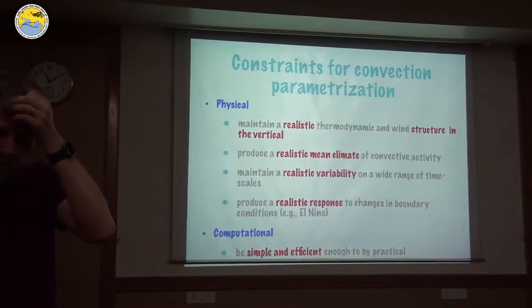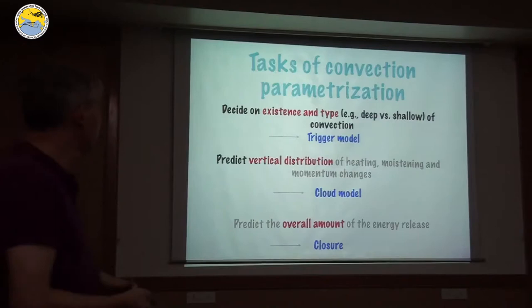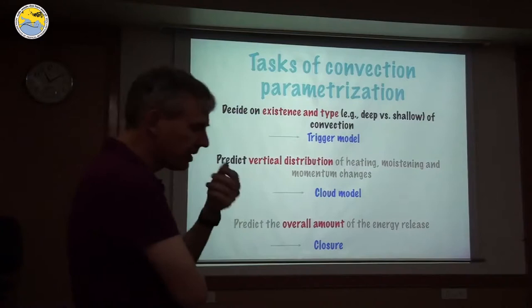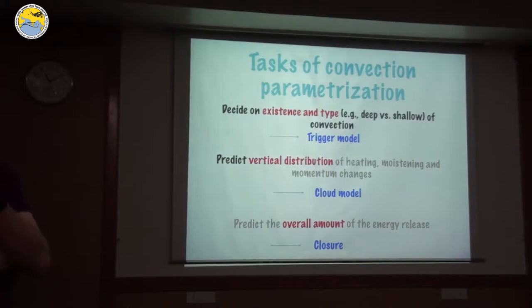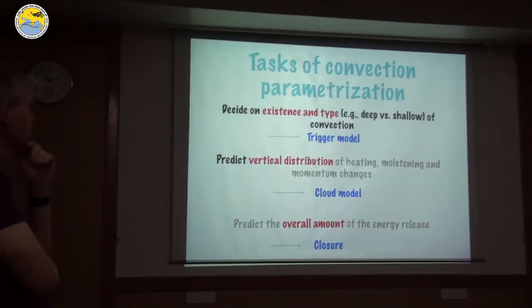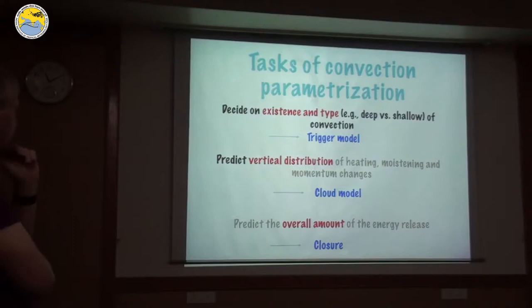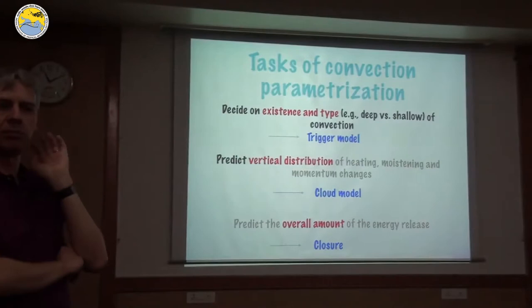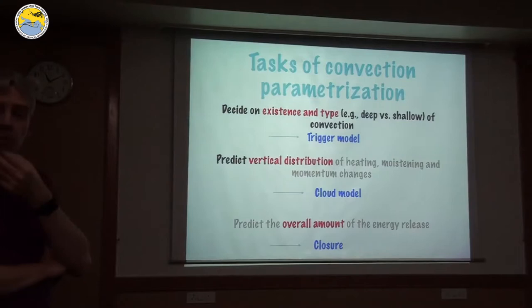What does the convection parameterization have to do in the model? There are three things we have to predict. First, in every grid box and every time step, we need to decide whether there's convection at that grid box or not. We also often want to decide what type of convection — shallow clouds, deep clouds, organized or not organized, though very few models handle organized convection. In the jargon of convection parameterization, this is called the trigger model. Each convection scheme, no matter how it's designed, has one of those trigger models, and it turns out to be quite an important part.